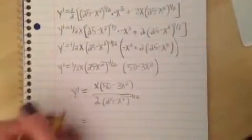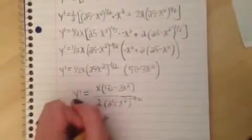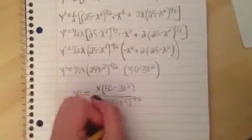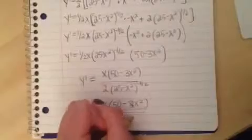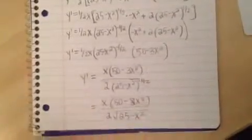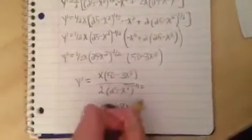And then as our final answer, except one little thing. We could change this to a square root, so we'll just do that. So x times 50 minus 3x squared over 2 square root of 25 minus x squared. And that is our final answer.